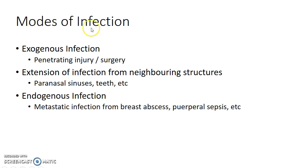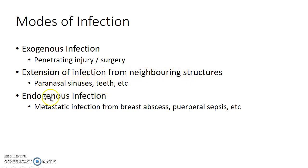What are the modes of infection seen in orbital cellulitis? Orbital cellulitis can be due to exogenous infection from penetrating injury or surgery. It can be due to extension of infection from neighboring structures like paranasal sinuses, teeth, etc. It can also be due to endogenous infection in the form of metastatic infection from breast abscess, puerperal sepsis, etc.